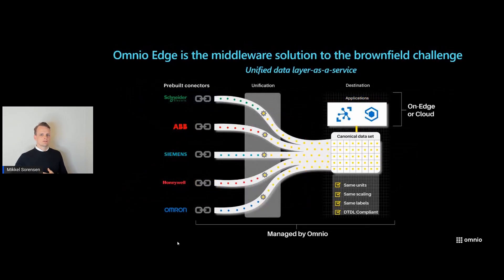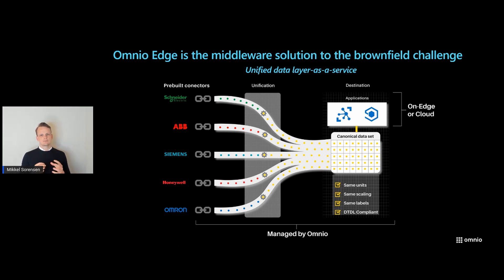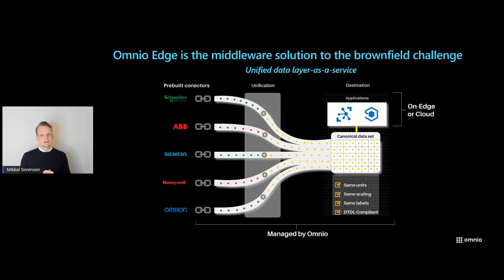In practice, Omnio Edge runs on the edge, extracting data from thousands of supported devices. It instantly unifies it and delivers it to the destination. By unifying already at the edge, we are able to support edge analytics, local HMIs, or even SCADA applications in the same location at the same time as it goes to the cloud — one version of the truth. We're a specialized company that works as a unified data layer, and once you have that unified data, you can build an application that will scale on Azure or in IoT Central.